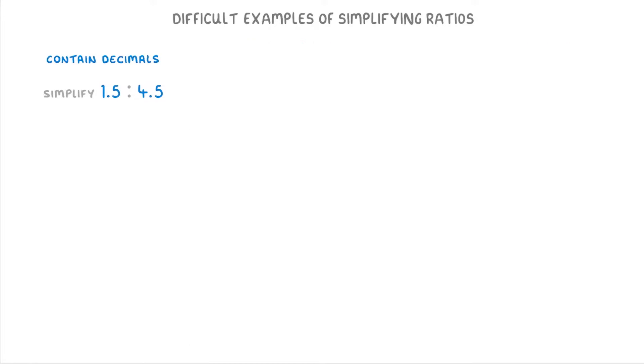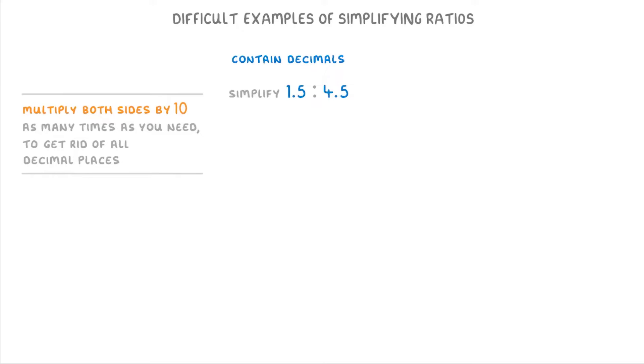If we start with decimals, like simplifying the ratio 1.5 to 4.5, the first thing we need to do with these is to multiply both sides of the ratio by 10 as many times as we need to to get rid of the decimal places. So in this case, that would mean multiplying both sides by 10 once to get 15 to 45.